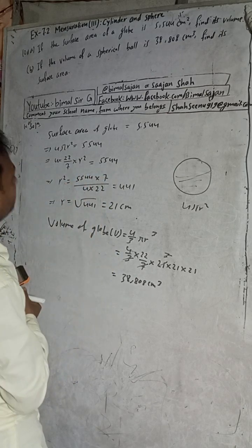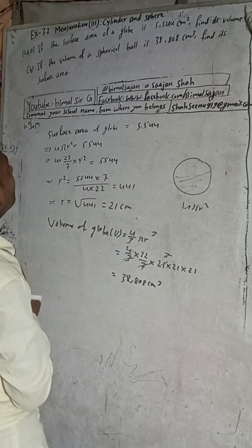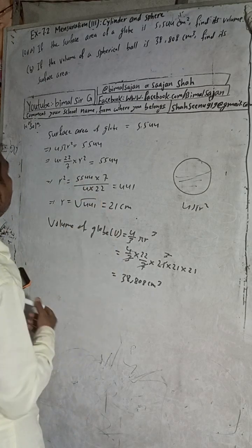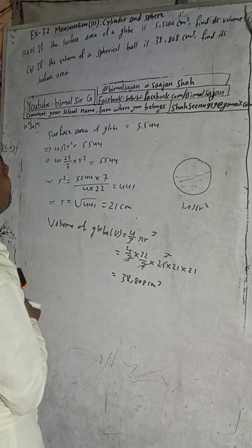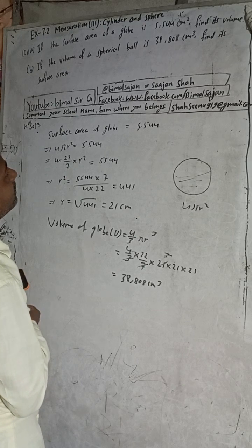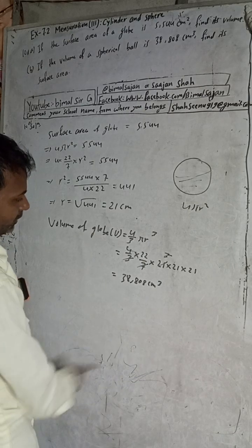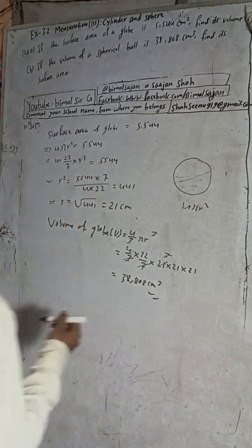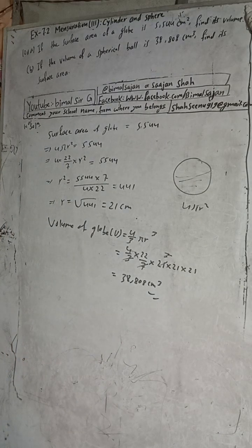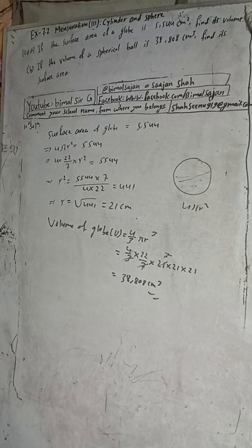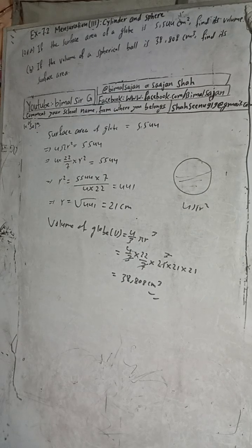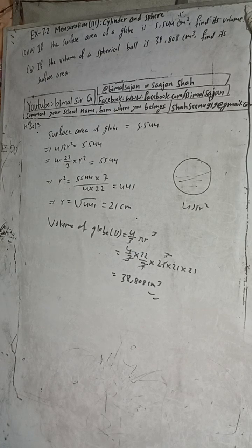So we have got this result. This is the solution for question 10A. The answer is: volume of the globe = 38,808 cm³.